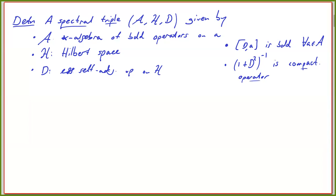There are several extensions of this definition. There can be a grading so that the Hilbert space is graded and there is compatibility of the other ingredients. There can be a real structure, which would bring us from spin-C to spin in the example I explained yesterday. But for these lectures, it is completely sufficient to just think about this naked spectral triple: you just have A, H, and D.